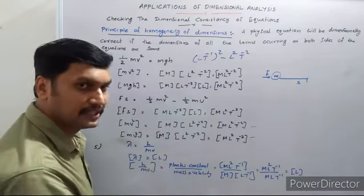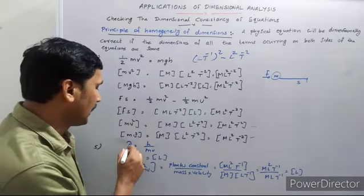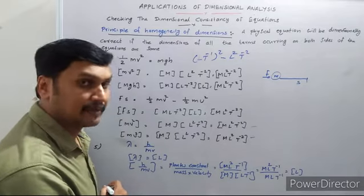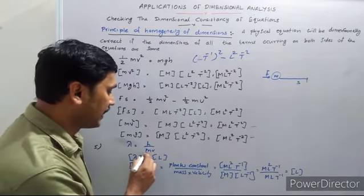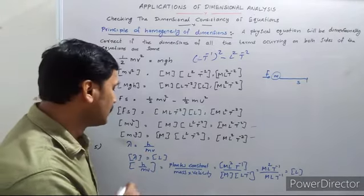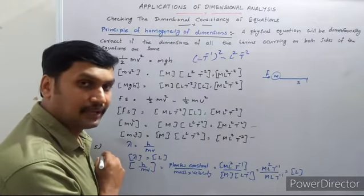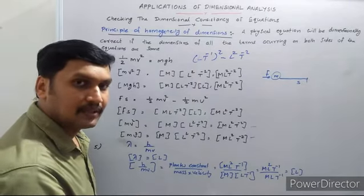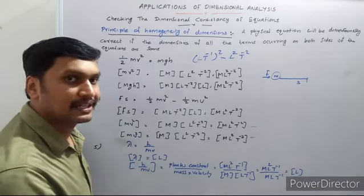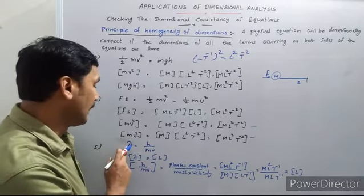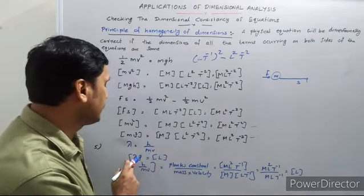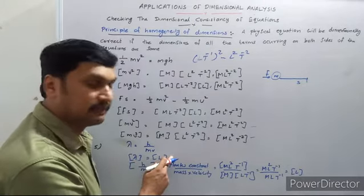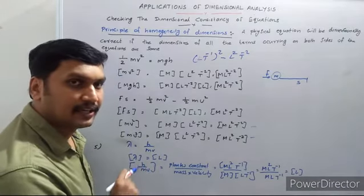Now see another equation: λ = h/mv. Here λ is the wavelength of a particle, h is Planck's constant (a dimensional constant), and mv is the momentum of the particle. This equation is known as the De Broglie wavelength equation — when a particle is moving, its wavelength can be written as λ = h/mv. The dimension of λ on the left-hand side is L. On the right-hand side we have h divided by mv.